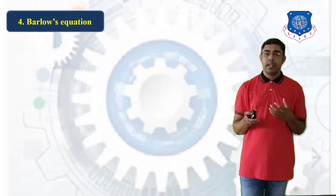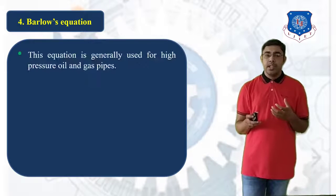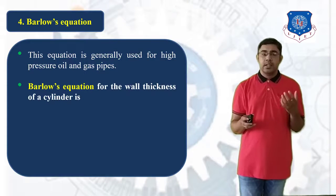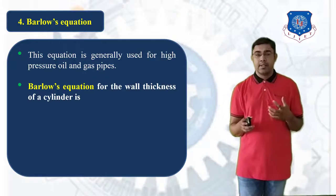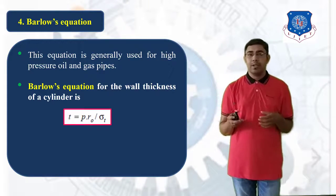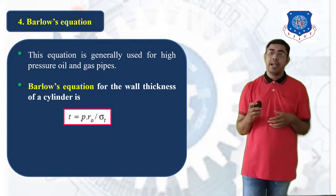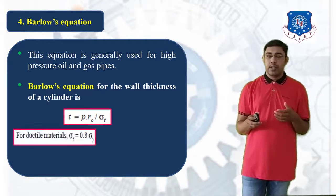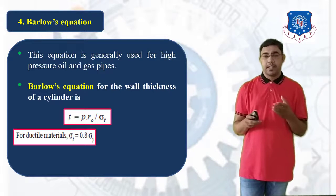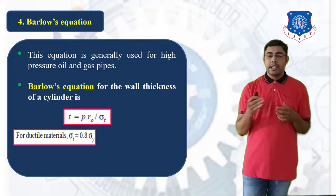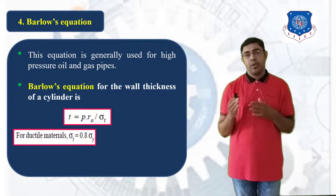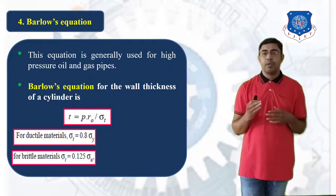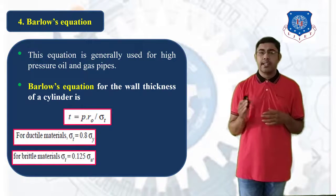Barlow's equation is generally used for high-pressure oil and gas pipes. According to this equation, the wall thickness T = P × Ro / sigma T, where sigma T is the allowable stress. For ductile materials, sigma T = 0.8 × sigma Y, and for brittle materials, sigma T = 0.125 × sigma ultimate.